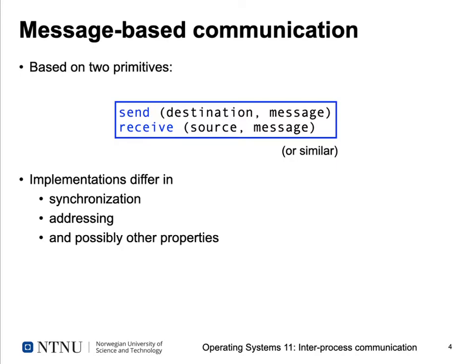Message-based communication relies on two primitives: a send function taking a destination and the message itself, and a receive function that provides a buffer pointer and optionally specifies the source. Real implementations may use different names but provide essentially the same functionality.